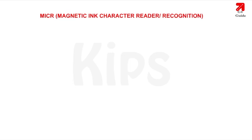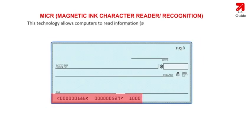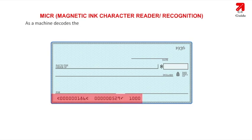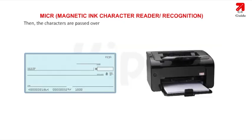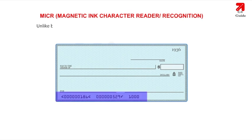MICR (Magnetic Ink Character Reader/Recognition) is primarily used by the banking industry to facilitate the processing of checks. It allows computers to read information such as account numbers from printed documents. MICR characters are printed in special typefaces with magnetic ink or toner, usually containing iron oxide. The machine first magnetizes the characters, then passes them over an MICR read head — a device similar to the playback head of a tape recorder — which produces a unique waveform for each character. Unlike barcodes, MICR codes can easily be read by humans.